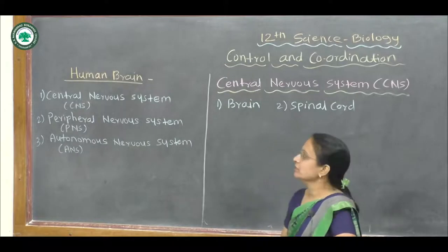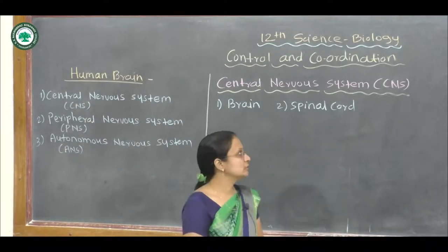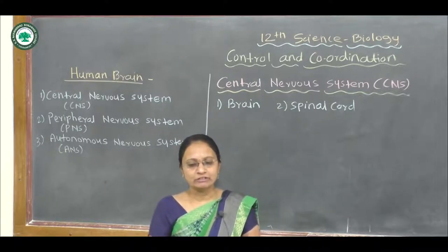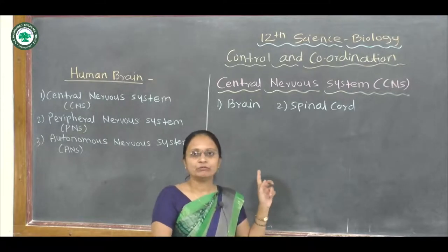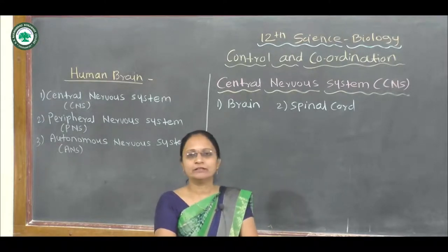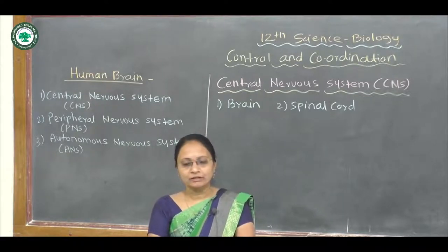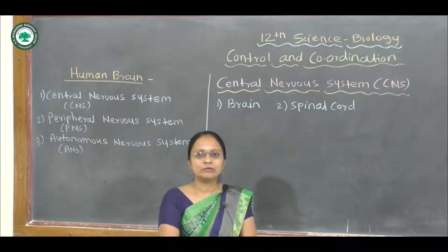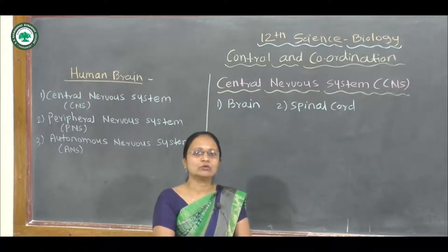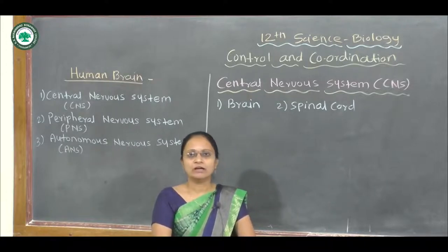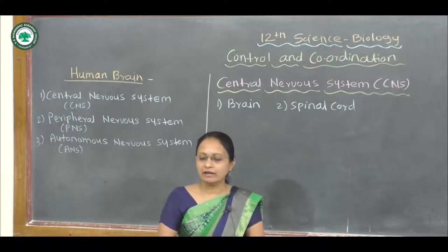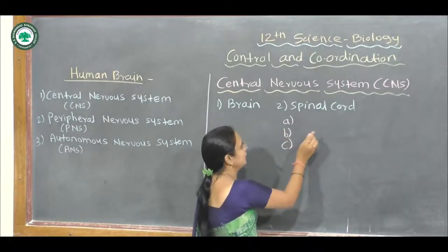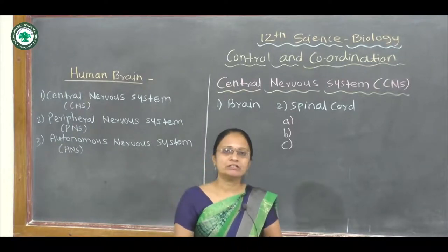The central nervous system's main important parts are the brain as well as the spinal cord. The brain is the important organ present in the head region and it is protected in the brain box, which we call the cranium. The spinal cord is protected inside the vertebral column. The spinal cord also has three different protective covers, which we call the meninges.